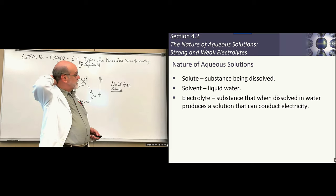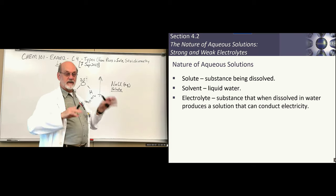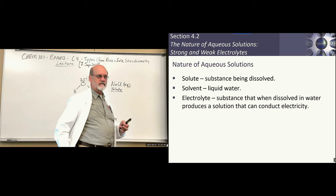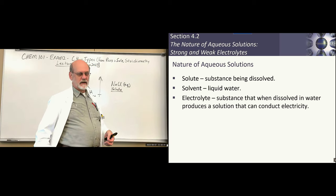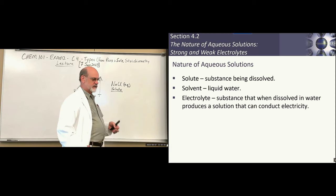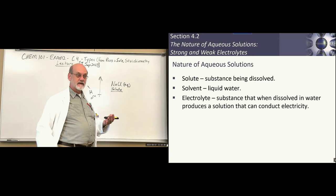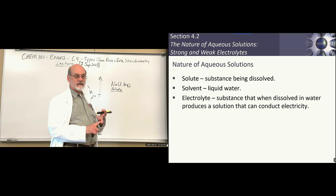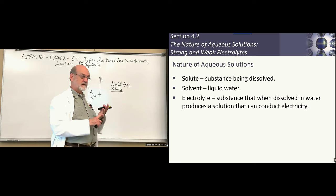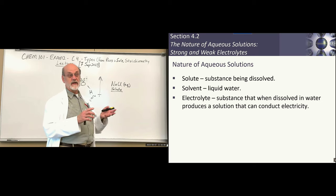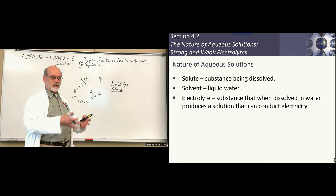In medical terms, electrolytes relate to things like blood or urinalysis results. A typical report lists your electrolytes — sodium, potassium, magnesium, calcium, chloride, maybe fluoride — all of which would be electrolytes in your sample.